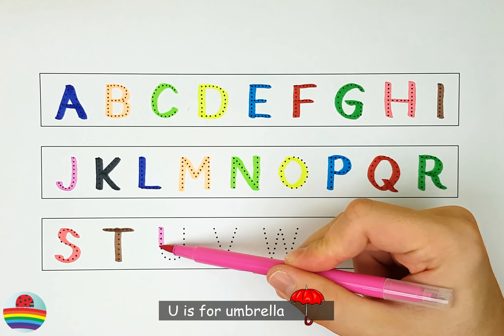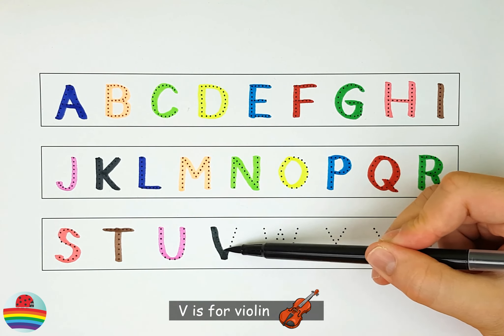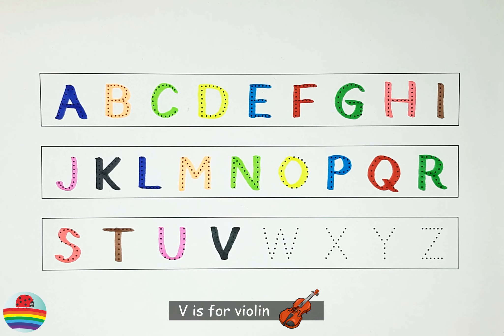S. S is for spider. T. T is for tractor. U. U is for umbrella.